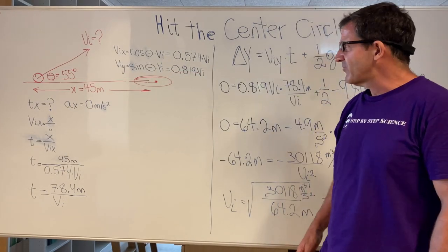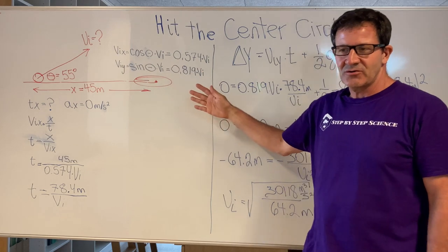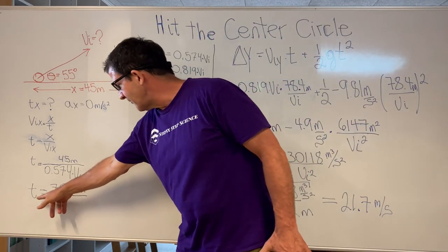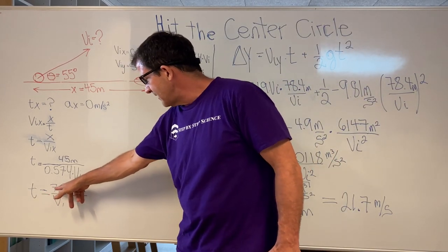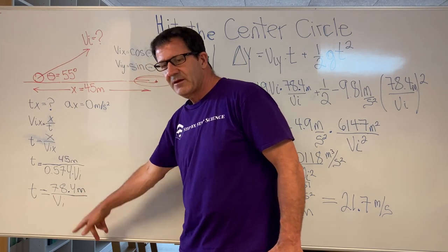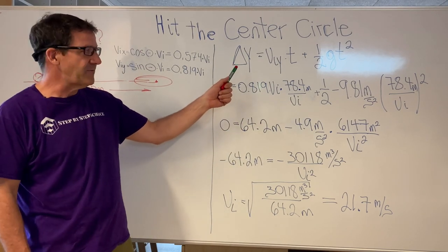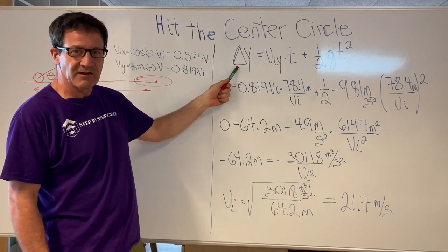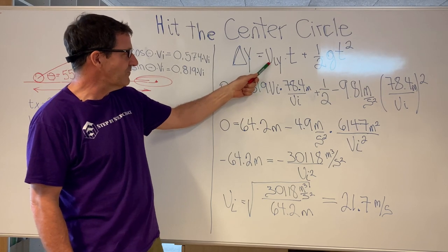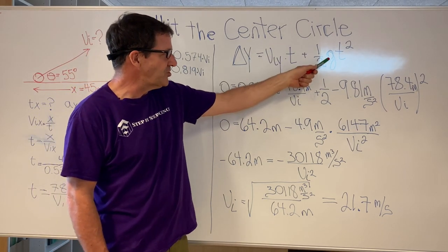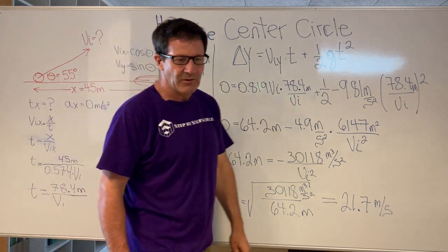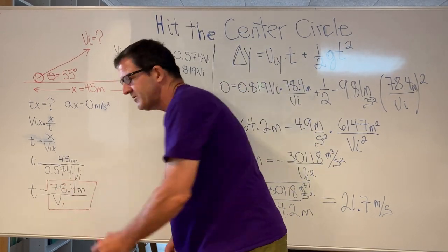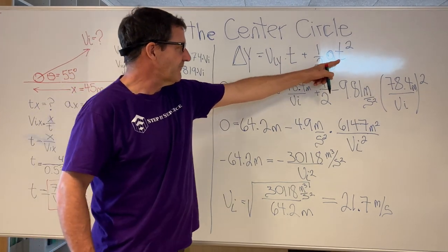Now we're going to do part two of the problem, figuring out what the initial velocity is needed to hit the center circle. The time is equal to 78.4 meters divided by the initial velocity. Now we use our kinematic equation: delta y equals the initial velocity in the y-direction times time, plus one-half g times t squared. We're going to substitute our time expression into this equation for both instances of time.